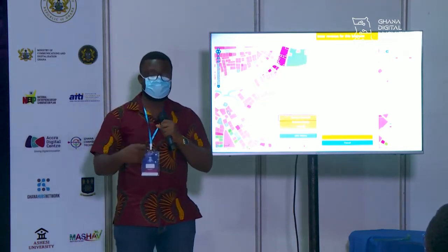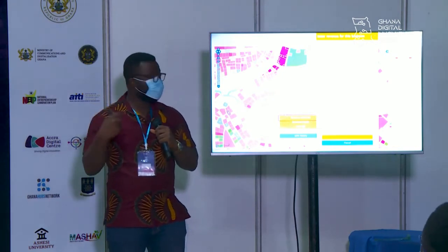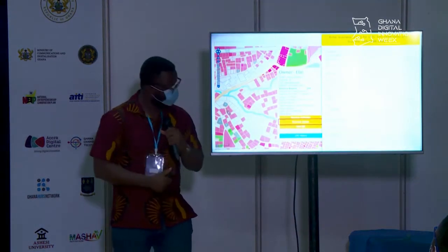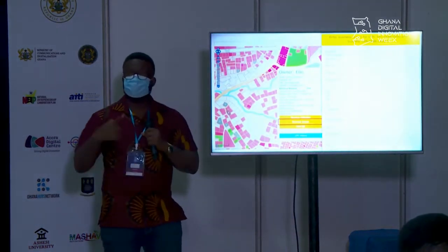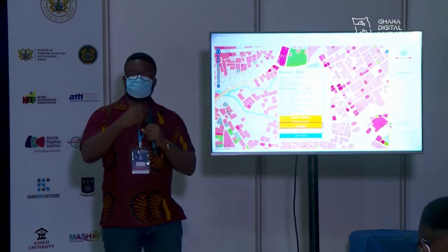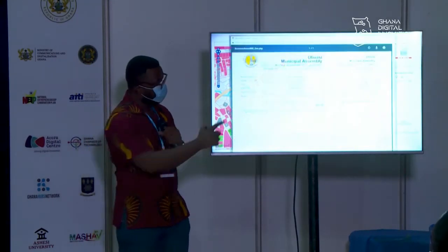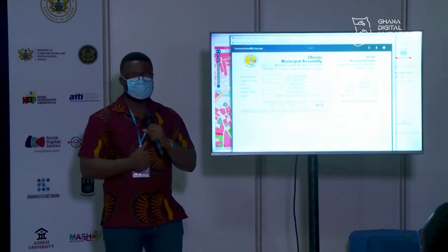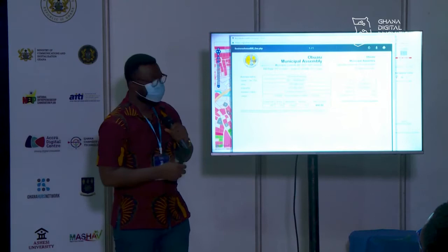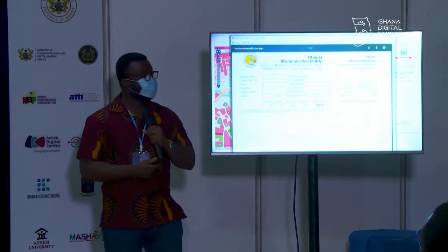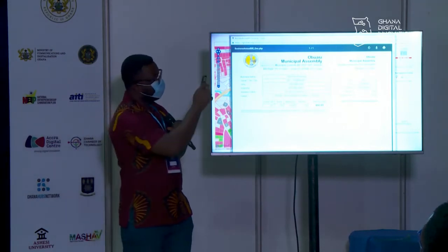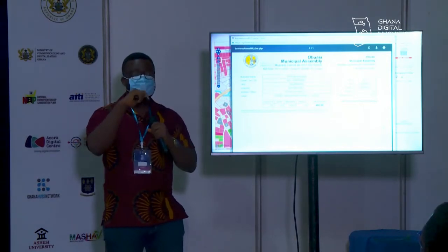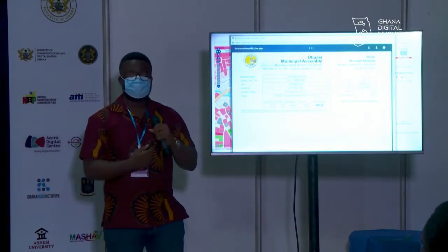You can also see more details of a particular property by clicking the business details form. When you want to print the bill or demand notices, which district assemblies usually distribute, you click on that and have the demand notice. This is the standard template that MMDAs are using, prescribed by the Ministry of Local Government. It includes the signature and stamp of the municipal assembly to show the authenticity of the bill being distributed.